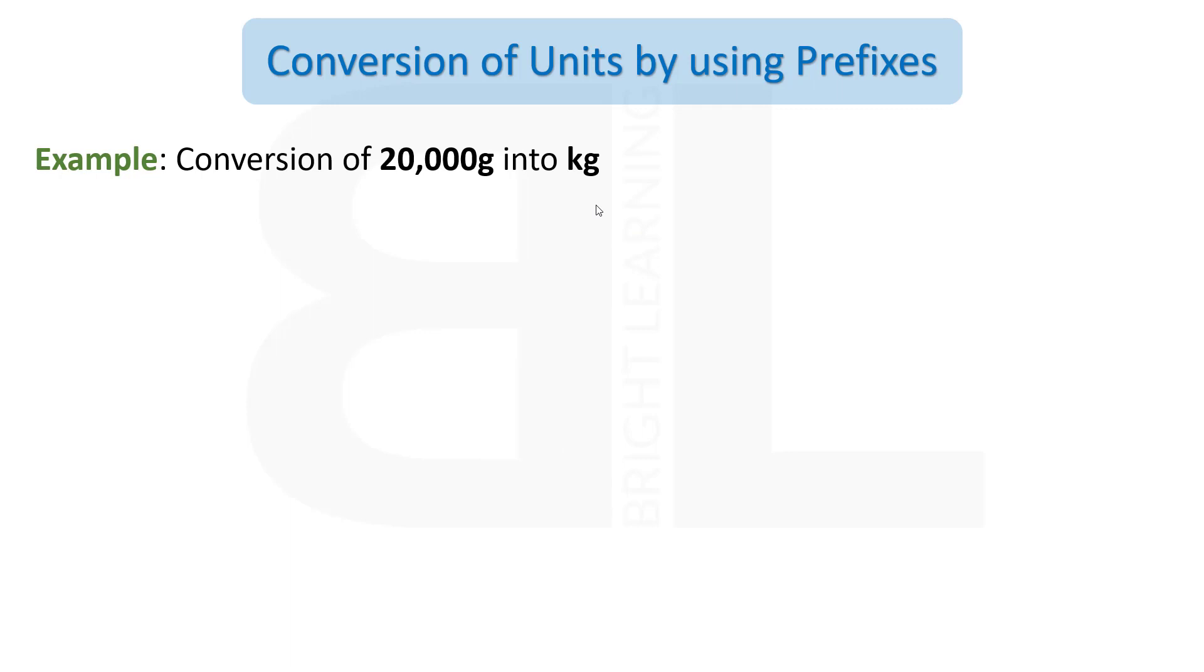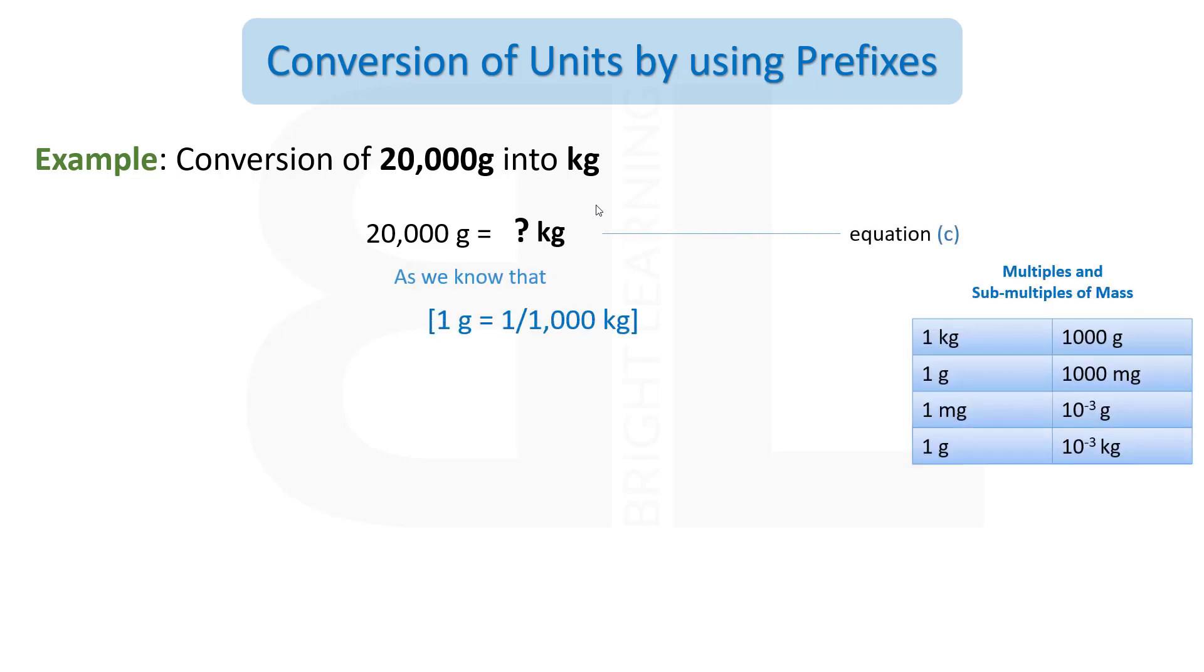Another conversion is 20,000 g will be converted into kg. Again, we don't know that 20,000 g equals how many kg. But we discussed that kilo is a thousand times more than the other unit of mass or length. So 1 g = 1/1000 kg, or we can say 1 g is a thousandth part of kilogram.